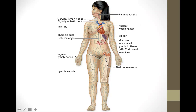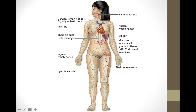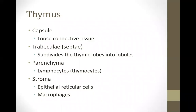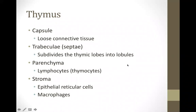Let's start with the thymus, which is found anterior to our heart. The thymus is composed of a capsule of loose connective tissue. Trabeculae extend from the capsule into the organ — these are septae that subdivide the thymic lobes into thymic lobules. The parenchyma of the thymus is lymphocytes, but the more appropriate term when referring to the thymus is thymocytes.